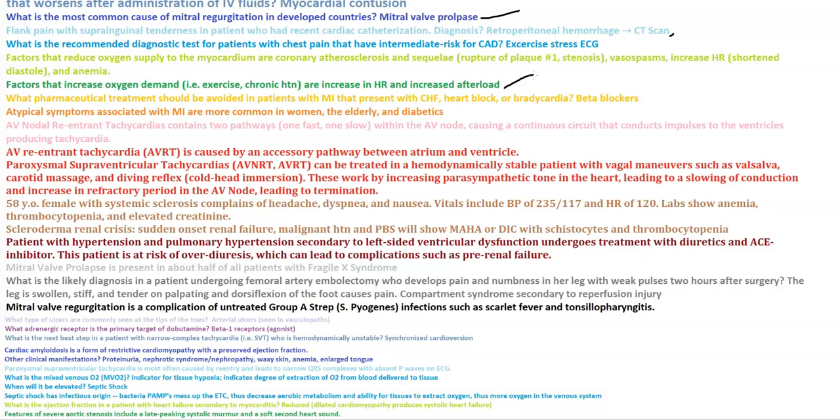Paroxysmal supraventricular tachycardia, including AVNRT and AVRT, can be treated in a hemodynamically stable patient with vagal maneuvers such as valsalva, carotid massage, or the diving reflex — cold head immersion. These work by increasing parasympathetic tone, leading to slowing of conduction and increase in refractory period in the AV node, leading to termination.